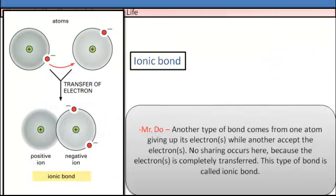Another type of bond comes from one atom giving up its electron while another accepts the electron. No sharing occurs here because the electron is completely transferred. This type of bond is called an ionic bond.